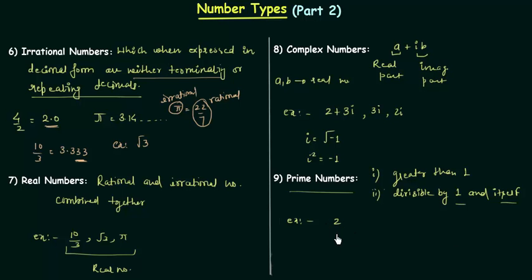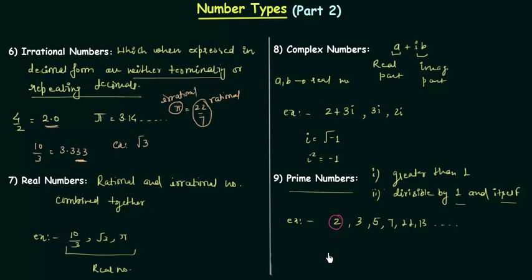For example, 2 is a prime number because it is greater than 1 and is only divisible by 1 and 2. Similarly, 3, 5, 7, 11, and 13 are prime numbers. One important point to note: 2 is the only prime number which is even; all the rest are odd prime numbers.